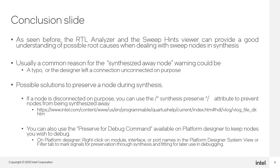As seen before, the RTL analyzer and the Sweep Hints Viewer can provide a good understanding of possible root causes when dealing with swept nodes in synthesis. Usually, a common reason for the synthesized away node warning could be a typo or the designer left a connection unconnected on purpose. Possible solutions to preserve a node during synthesis: if a node is connected on purpose, you can use the synthesis.preserve attribute to prevent nodes from being synthesized away. Or you can also use the preserve_for_debug command, available in Platform Designer, to keep nodes you wish to debug.